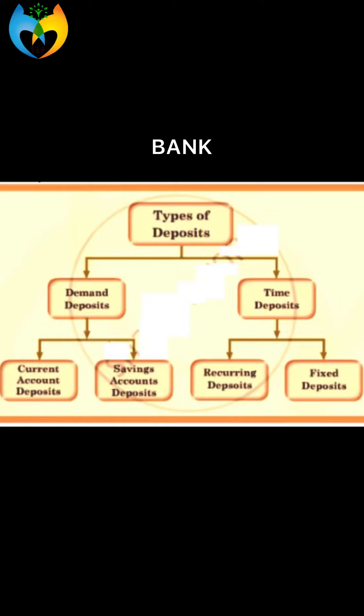The second type of deposits are time deposits. These are deposits which can be withdrawn only after a certain period of time. Unlike demand deposits, they are not payable as and when demanded. Time deposits are of two types: recurring deposits and fixed deposits. Under a recurring deposit account, the customer deposits a fixed amount periodically up to a certain period, the amount keeps accumulating, interest is provided on these deposits, and the amount can be withdrawn only after the end of a particular period of time.